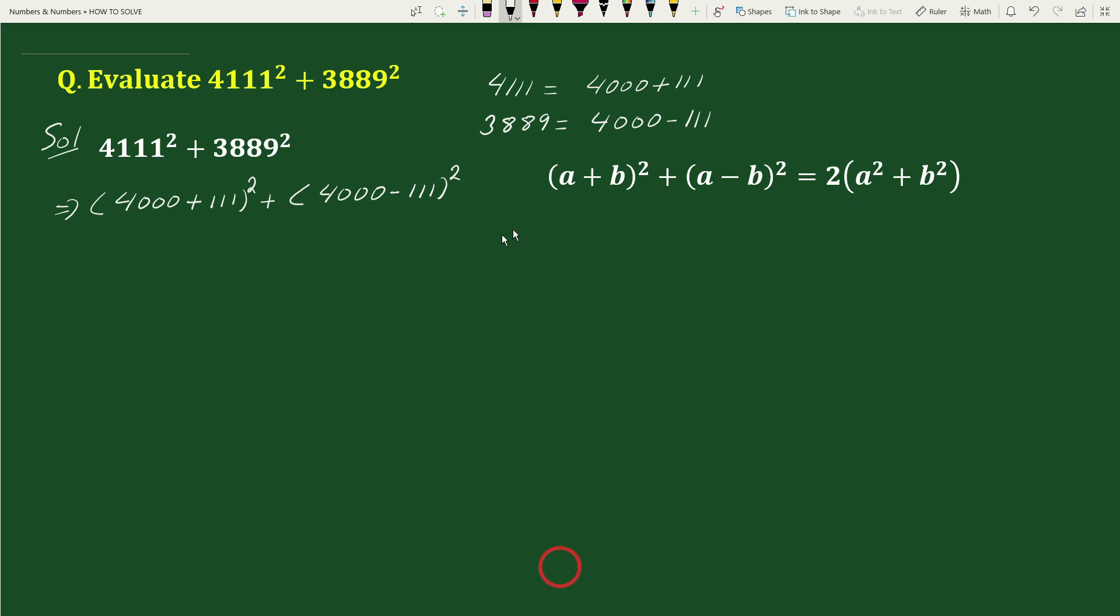In place of a we have 4000 here and in place of b we have 111. So this equals to 2 times 4000 square plus 111 square.